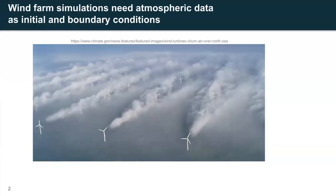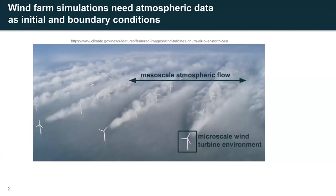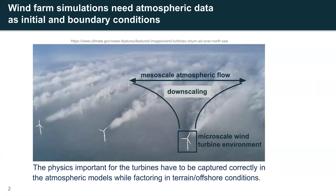Offshore wind turbines have a huge potential in terms of renewable power generation. At this point we are quite good at modeling individual turbines in a uniform unidirectional flow, but for more effective wind farm simulations we need to model the interactions between the atmospheric flow and the turbine. There is the mesoscale atmosphere and then the microscale wind turbine environment, and the process of funneling down information from the macro scale to the micro scale is called downscaling. The physics important for the turbine, such as the turbulence characteristics or the kinetic energy, need to be modeled correctly during this process.